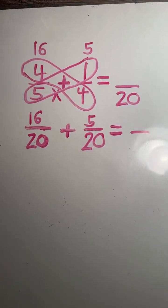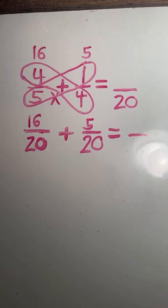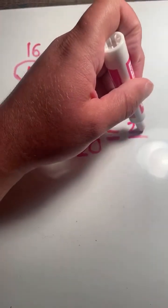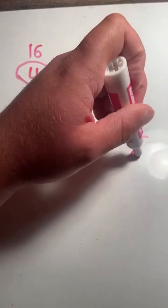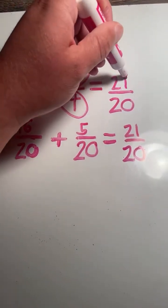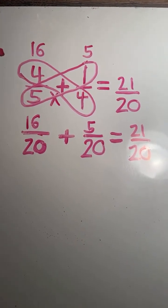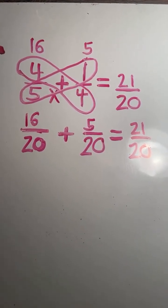All right, 16-20ths plus 5-20ths. 16 plus 5 equals 21. Now that we have a common denominator, it will stay the same. So we have our answer, and it is an improper fraction. Four-fifths plus one-fourth equals 21-20ths.